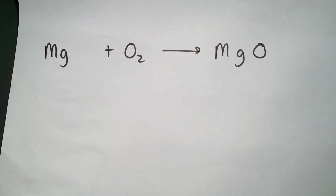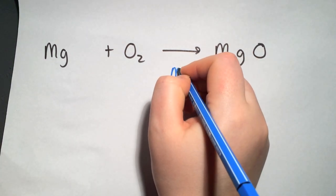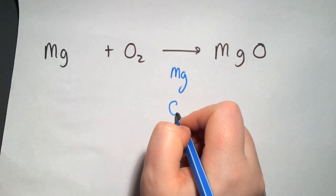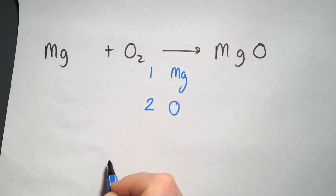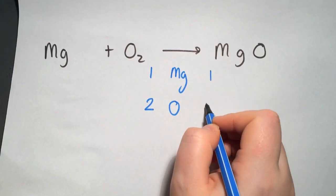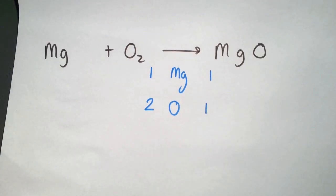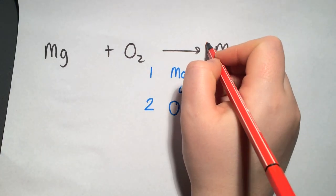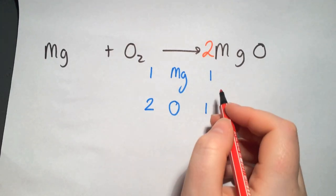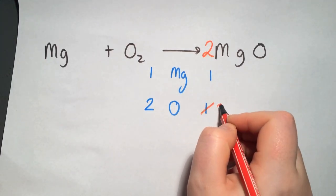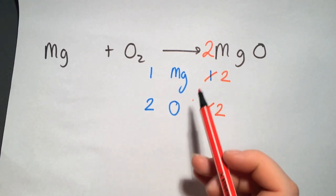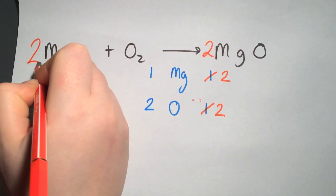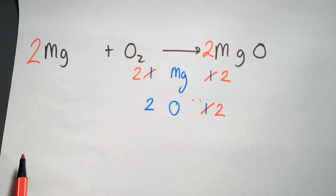This is another example of a metal with oxygen — we have magnesium and oxygen. On the left hand side we have one magnesium and two oxygens; on the right hand side we have one magnesium and one oxygen. To balance this we start with the oxygen: we have two and one, so put a large two in front of the magnesium oxide. That multiplies the oxygen by two but also the magnesium by two, then simply put a large two in front of the magnesium on the left — that allows it to be balanced.